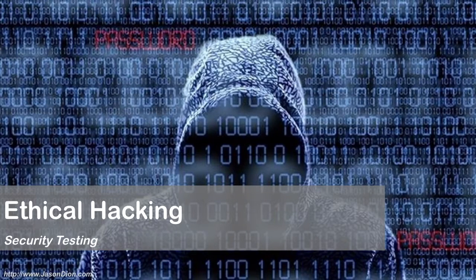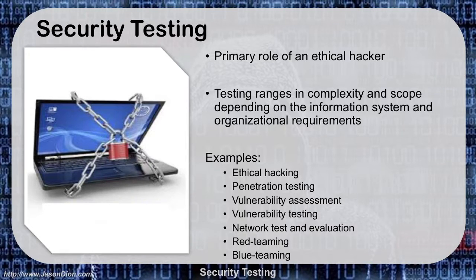In this video, we're going to talk about the different types of security testing that are testable on the certified ethical hacker exam, and just the types that you can do in general as an ethical hacker. Security testing is the primary role of an ethical hacker. You're hired by a company to do penetration testing and security testing across their enclaves. Testing ranges in complexity and scope based on the requirements of the organization and the information system. You can do things like ethical hacking, penetration testing, vulnerability assessments, vulnerability testing, network testing and evaluation, red teaming, or blue teaming.